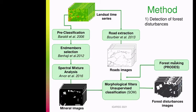All images were masked using the 2017 PRODES mask to consider only primary forest and to remove secondary forests. Erosion and dilation filters were then applied on mineral mask images to enhance contrast. Finally, a self-organizing map neural network was applied to identify forest disturbances.